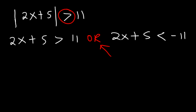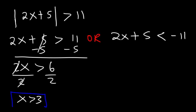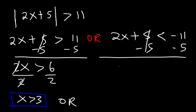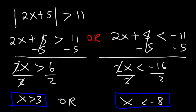Now let's finish this problem. Let's solve the inequality on the left by subtracting both sides by 5. 11 minus 5 is 6. Next, divide both sides by 2. 6 divided by 2 is 3. So our first answer is x is greater than 3. Now let's get the second answer. We're going to subtract both sides by 5. Negative 11 minus 5 is negative 16. Then divide both sides by 2. Negative 16 divided by 2 is negative 8. So x is less than negative 8.